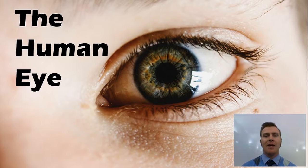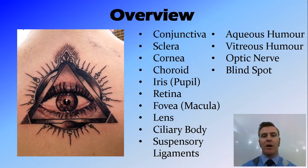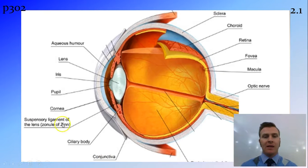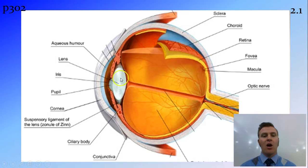In this video we're going to look at the anatomy of the human eye. There are a lot of different parts, and what I'm going to do is go through each one and try to link them together towards the end. The eye is the organ of sight, and what allows us to see is the photoreceptors found in the retina at the back of the eye. Basically, light comes in from outside, comes through the pupil, refracts on the lens, and is focused onto the retina at the back of the eye.